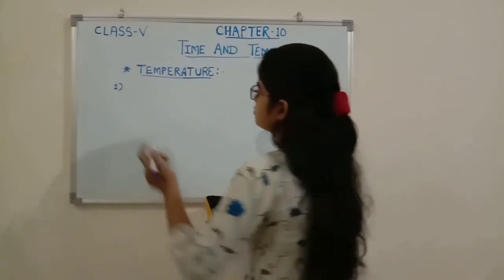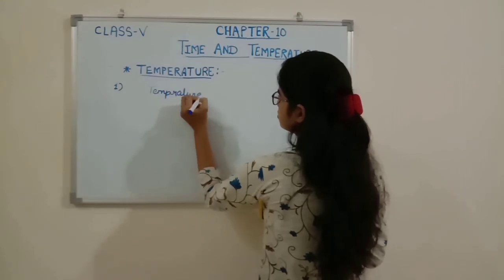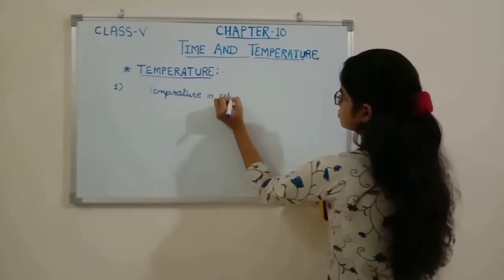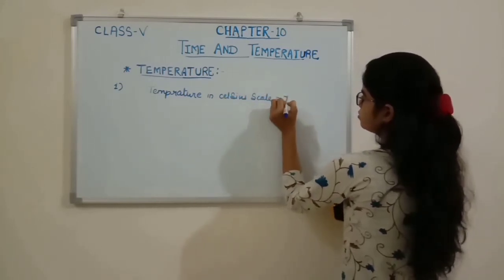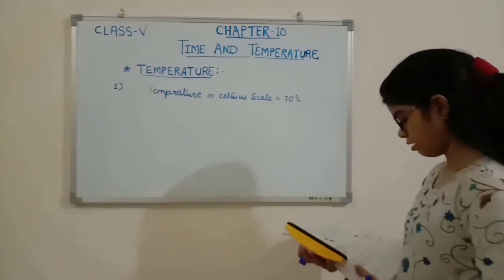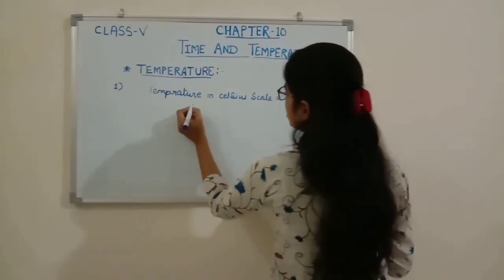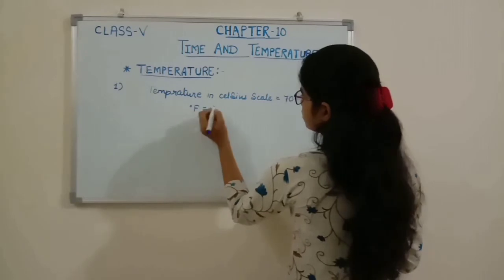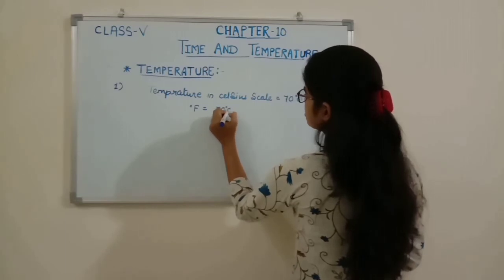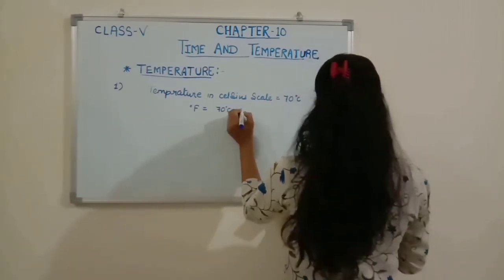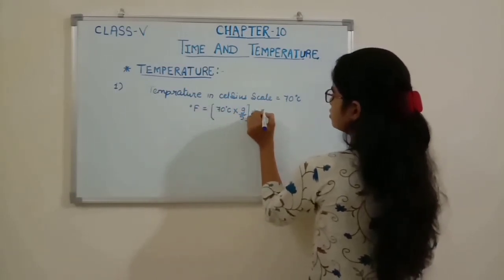The temperature in Celsius scale is equal to 70 degrees Celsius and we have to find the temperature in Fahrenheit scale. The formula is: degree Fahrenheit = degree Celsius × 9/5 + 32. So: 70 × 9/5 + 32.